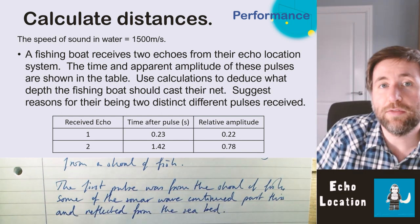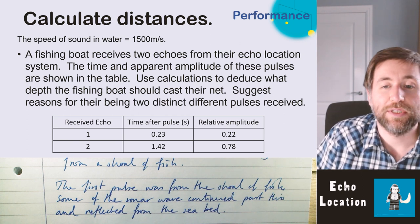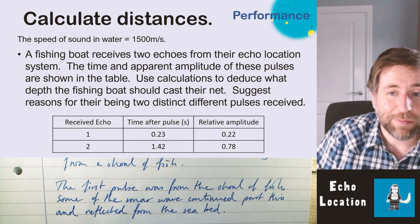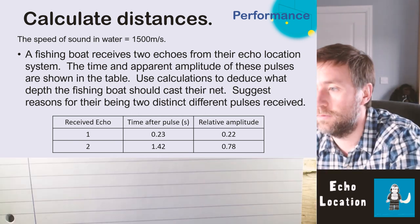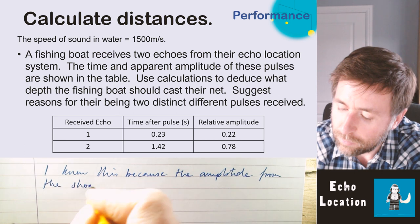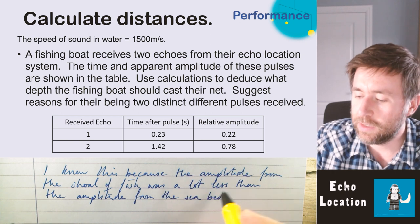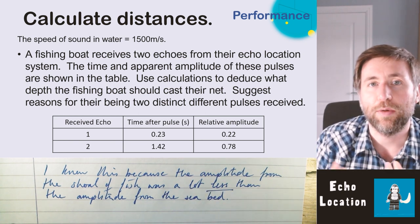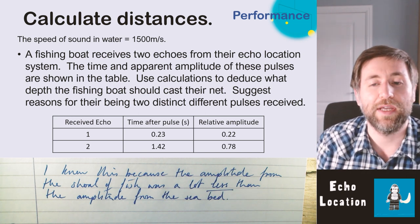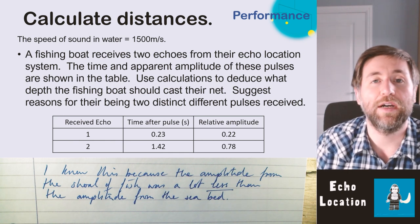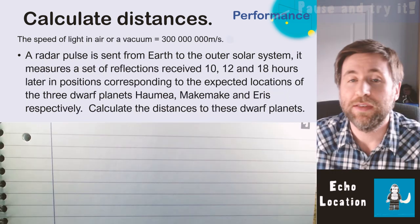Using the amplitude data to suggest reasons for two distinct pulses: one pulse is from the shoal of fish and the other from the seabed. The amplitude of the shoal echo is much less than the amplitude of the echo from the seabed. The key word is 'less' — it makes it a comparison. Don't just re-quote the data; compare it using comparative language to earn the mark.